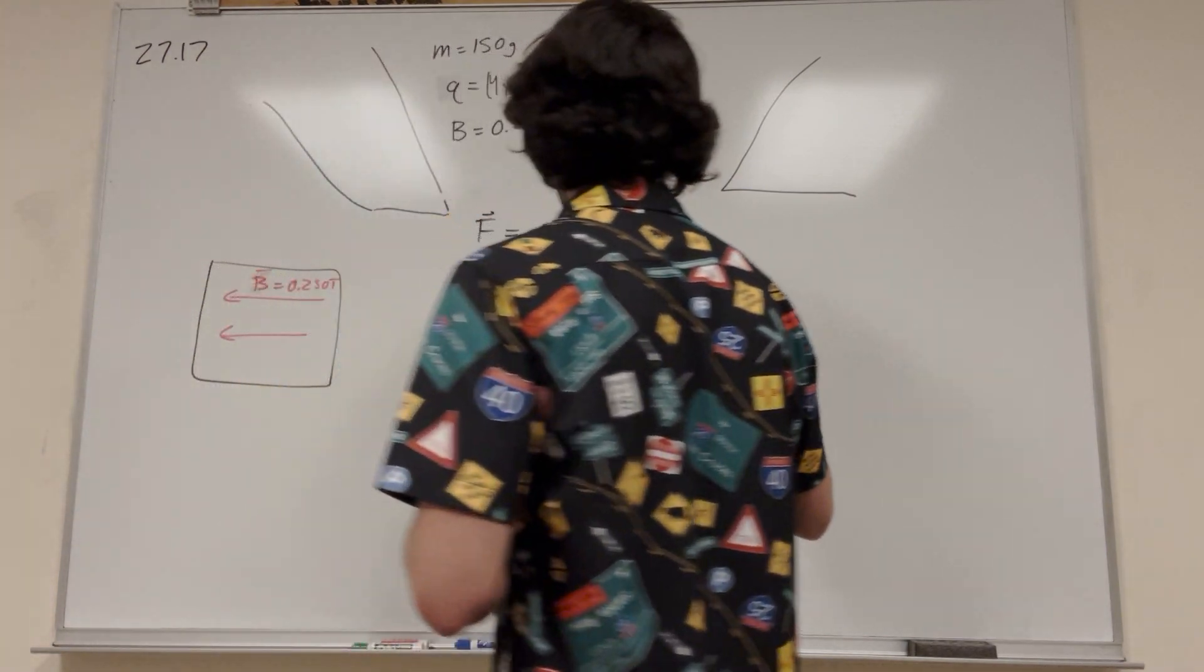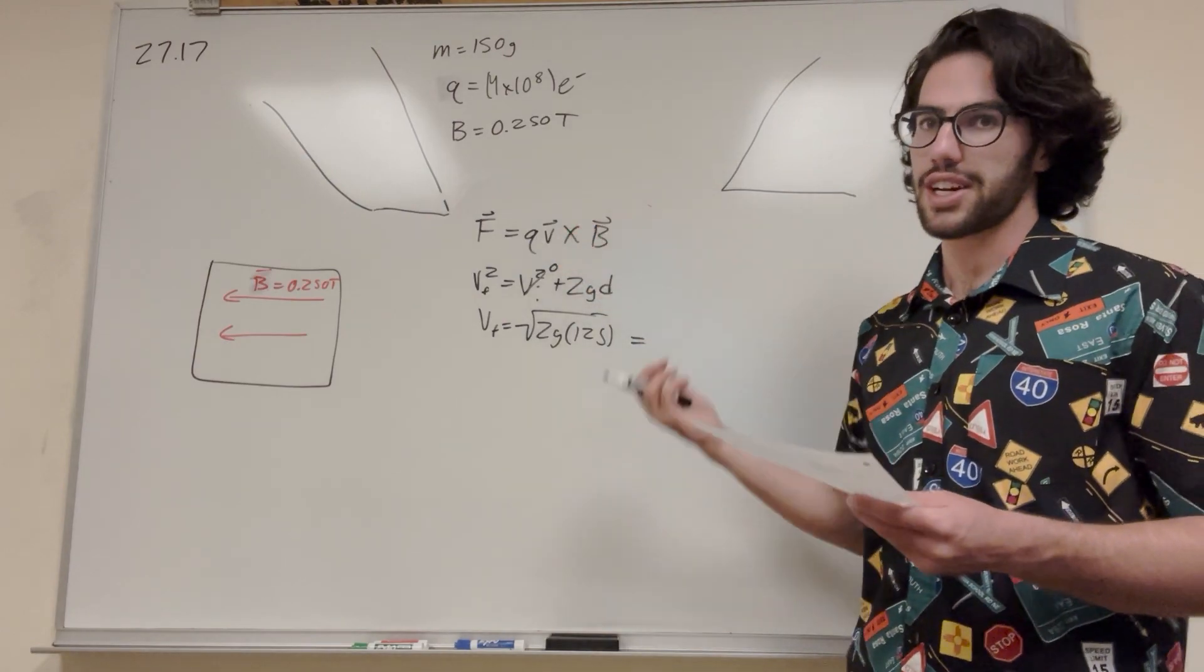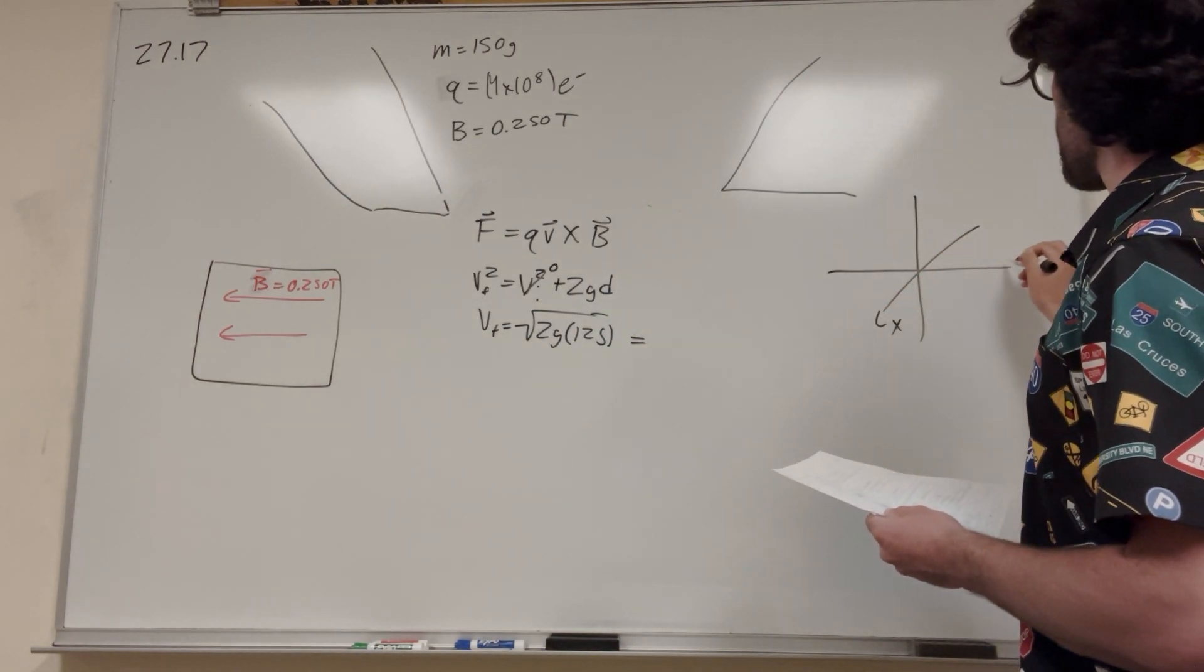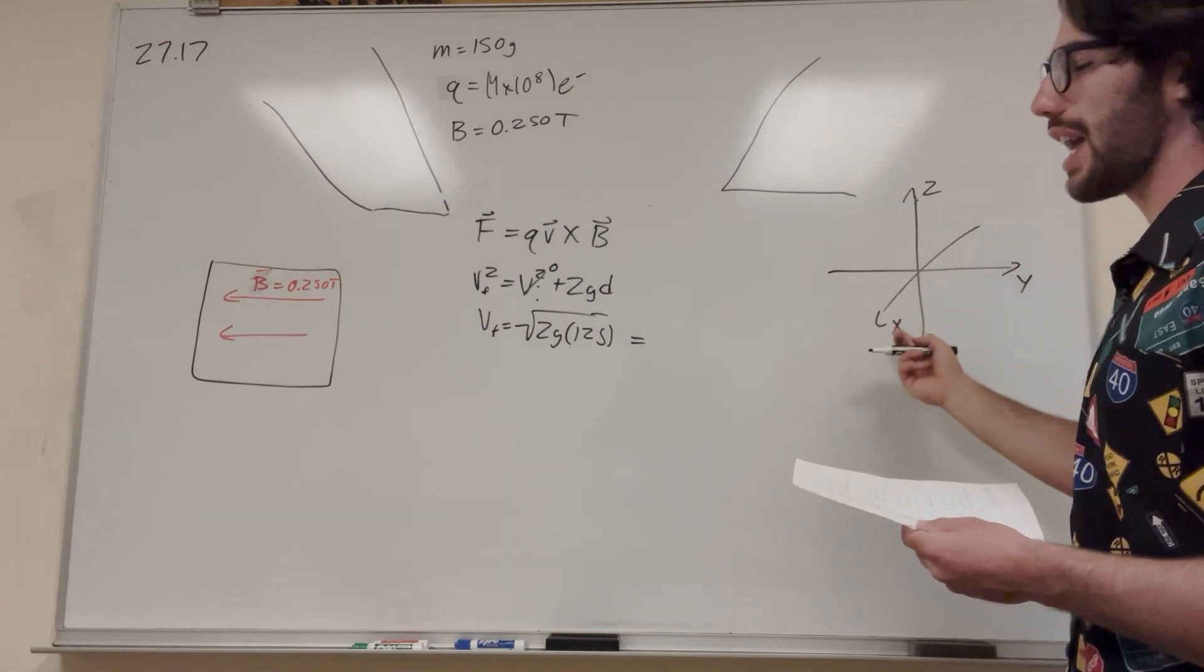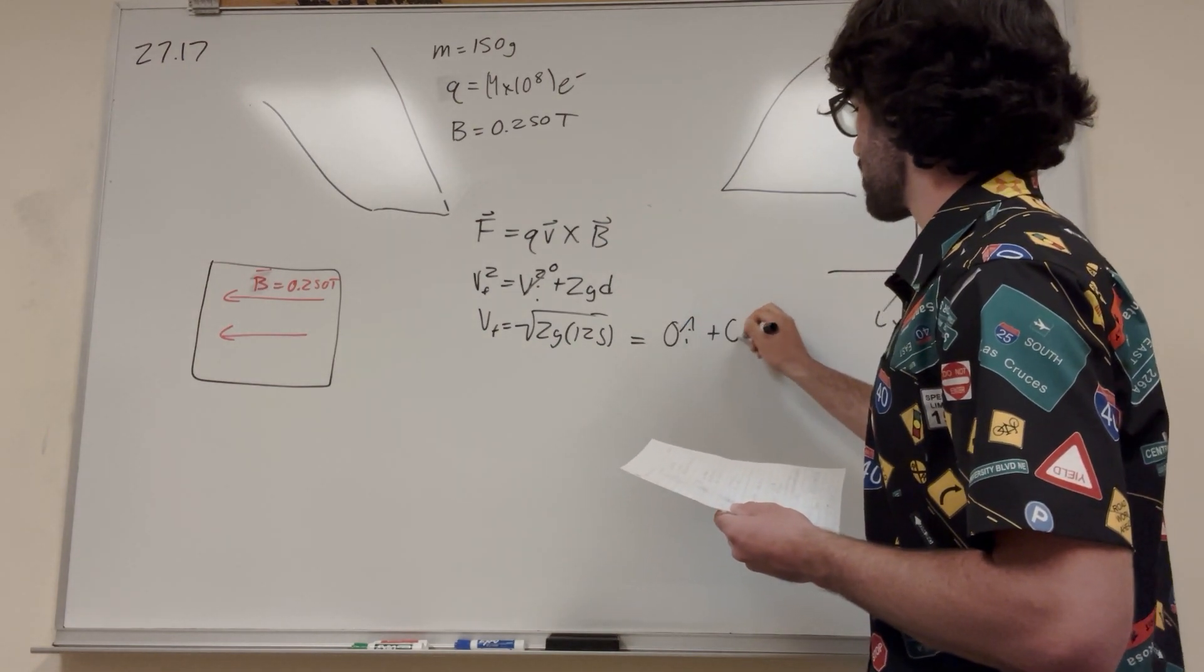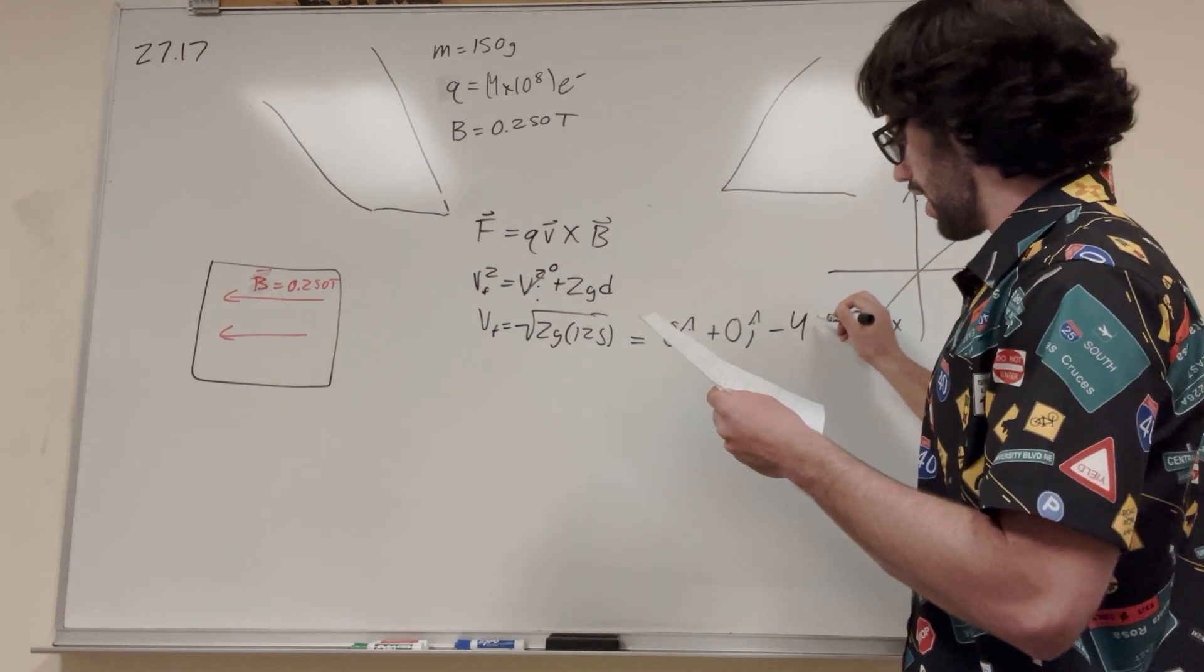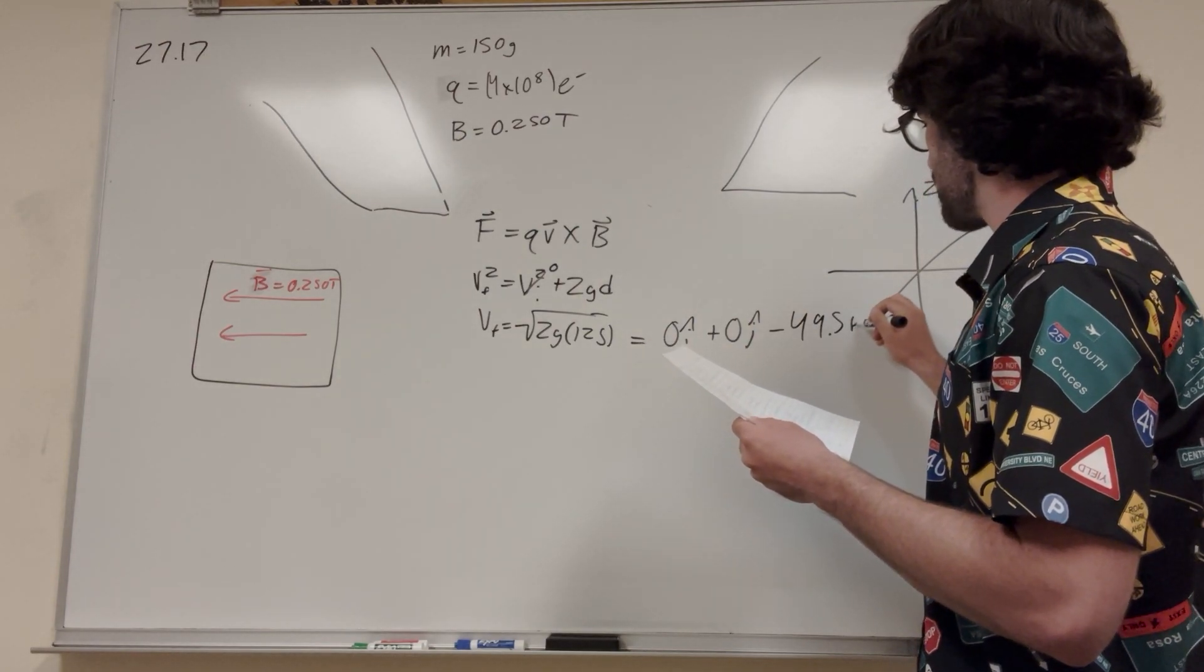So we're going to find the velocity final, and we need to write this as a vector. Because in our formula, we need velocity as a vector. So if we drop it straight down, it's going to have no X component. Let's say that our field looks like this. This is X, this is Y, this is Z. So it's going to be falling straight down. So it's going to be 0 in the X, 0 in the Y, but whatever it is in the Z. It's going to be 0i plus 0j, but it's going to be minus whatever that velocity is. So this number gives you 49.5k meters a second.